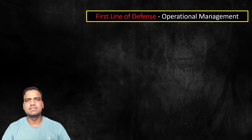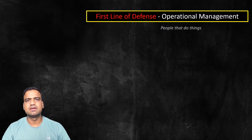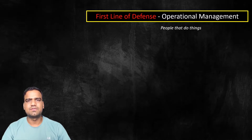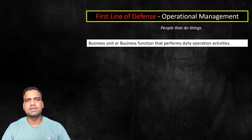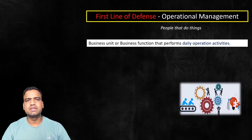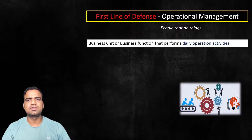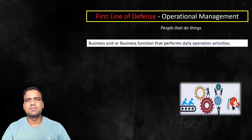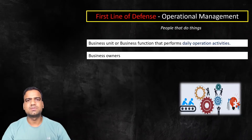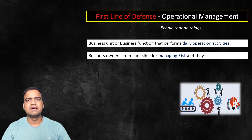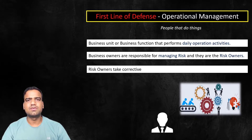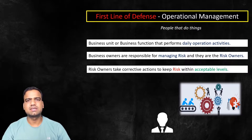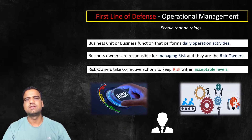What is the first line of defense? The first line of defense is operational management. It is often implemented by the business unit or business functions that perform daily operational activities, especially those that are at the frontlines of the enterprise. Operational managers or business owners are responsible for managing risk — they are the risk owners. Risk owners are responsible for implementing corrective actions to address risk and keep it within acceptable levels.